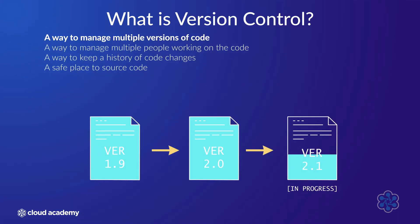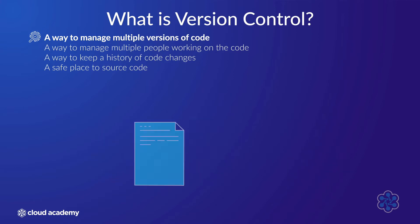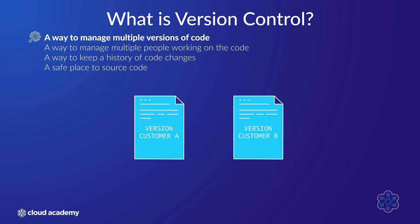What is version control? Version control, as the name suggests, is a means to manage different versions of your source code, and is also commonly referred to as source control. These code versions might be explicit versions of the application like 1.9 and 2.0, work-in-progress versions, or customized versions for different customers.